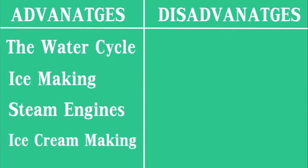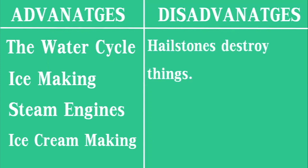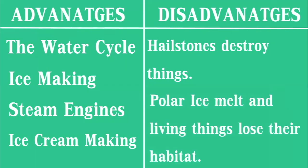And there are some negative sides of physical changes — disadvantages. Hailstones destroy plants and everything; big hailstones can destroy houses, cars, and other things. Also, polar ice melts and living things lose their habitat. Climate change makes the polar ice caps melt, which causes floods and makes living things lose their habitat.